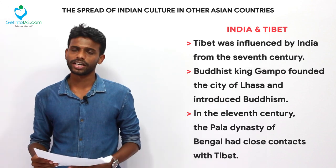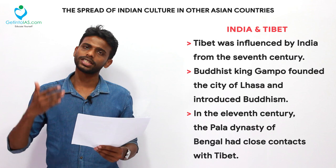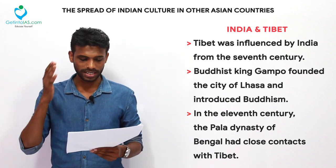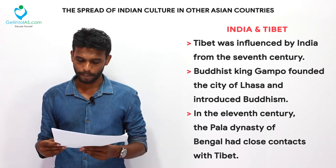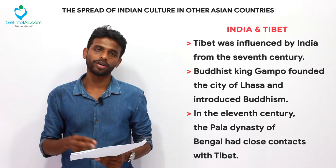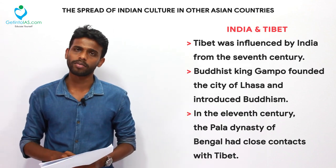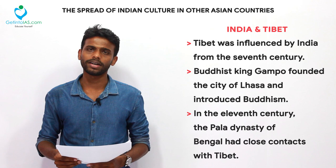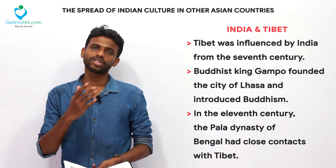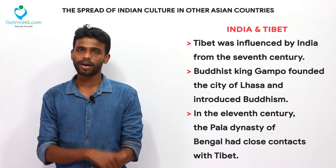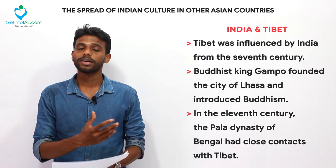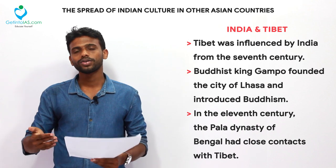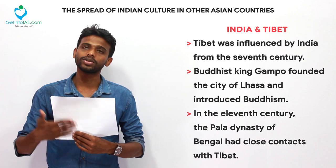Buddhism also spread to the Tibet region through land as well as water. The influence of India in Tibet started from the 7th century. The famous Buddhist king Songtsän Gampo founded the city of Lhasa and introduced Buddhism there. The Tibetan alphabets were designed by Indian scholars. In the 11th century, the Pala dynasty of Bengal had contacts with the Tibetan people. When West Bengal came under Muslim rulers, many Buddhist monks went to Tibet for shelter — that is why Tibet is full of Buddhist monks.